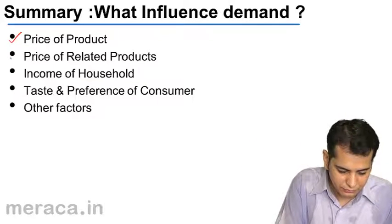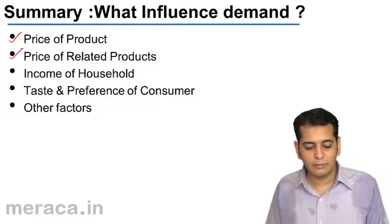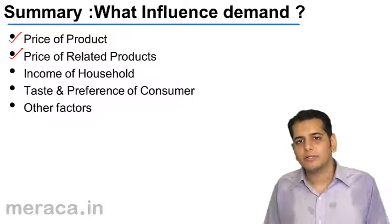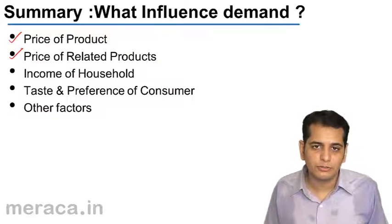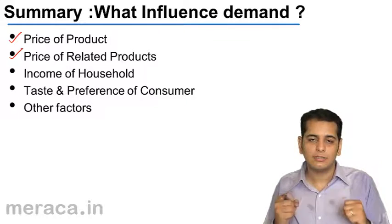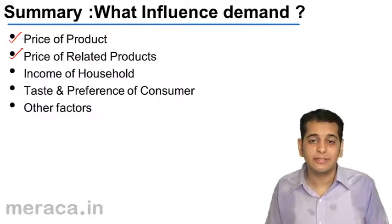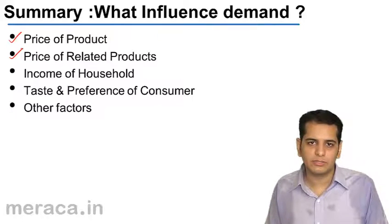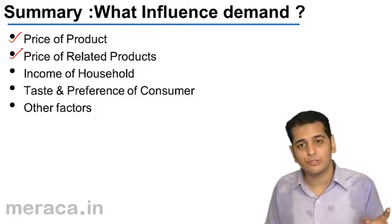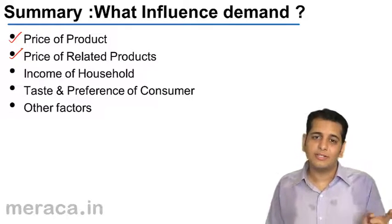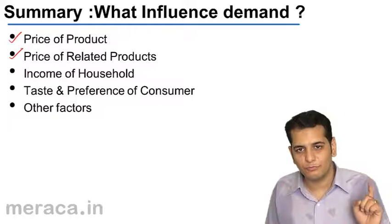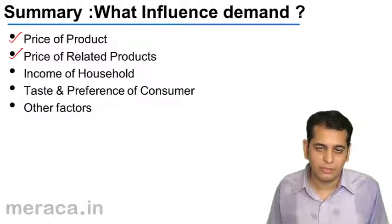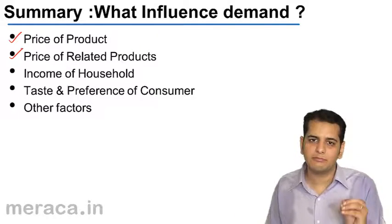They have an inverse relation. Second, price of related products — in this we've done two types: first is complementary goods, that is goods which are consumed together, goods which complete each other, they have a joint consumption. Second was goods which substitute or replace each other. In case of complementary goods, the relation is inverse — the price of one good is inversely related to the demand of the complementary good. And in case of substitutes, we have a direct relation.